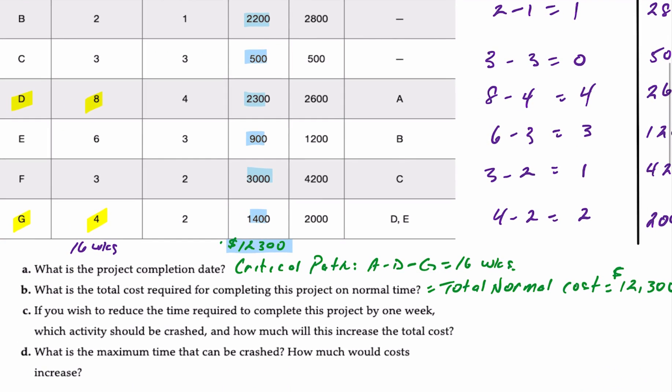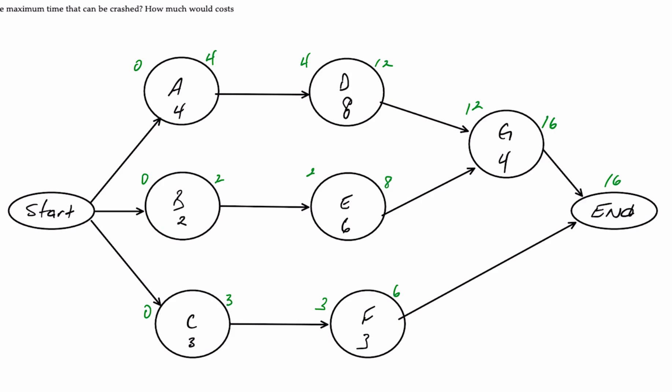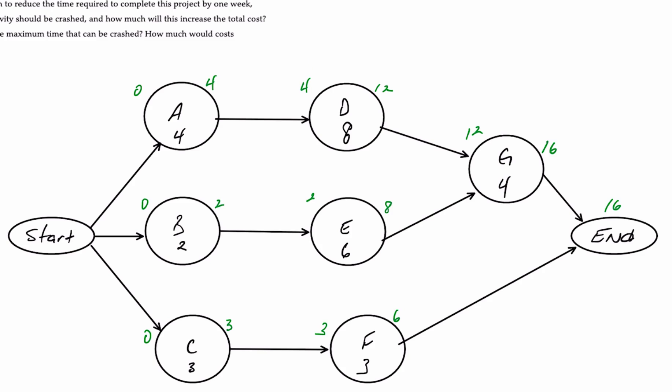Our objectives for the question are: first, determine the project completion date by drawing the network diagram. A, B, and C have no predecessors. D is preceded by A. E is preceded by B. F is preceded by C. G is preceded by both D and E. The project takes 16 weeks with a critical path of A, D, G.